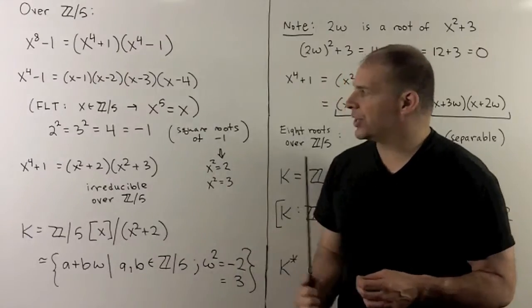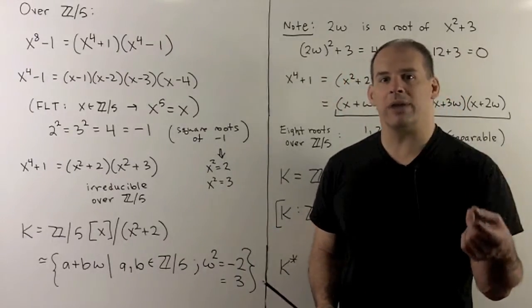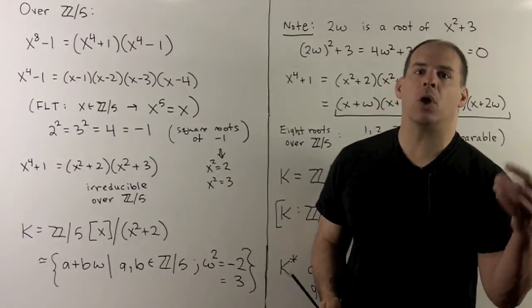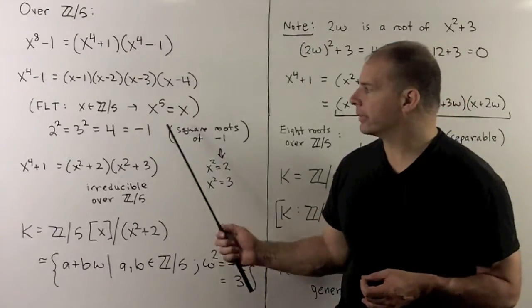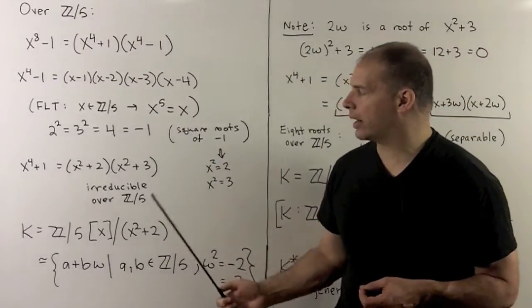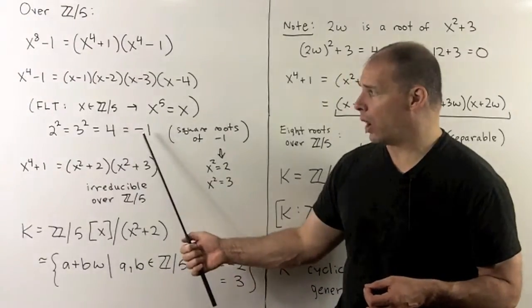This also says that Z mod 5 comes with square roots of -1 already in Z mod 5. So we have 2^2 = 3^2 = 4, which is -1.